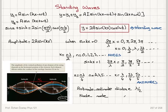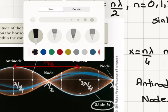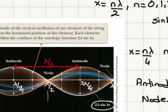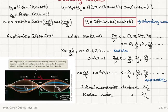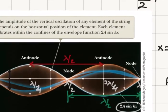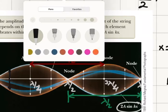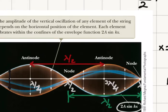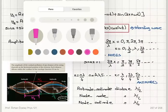The node-to-node distance is also λ/2 — from λ/2 to λ, that distance is λ/2. And the distance between a node and a neighboring antinode is λ/4. For example, from the node at λ/4 to the next node at λ/2, that distance is λ/4.